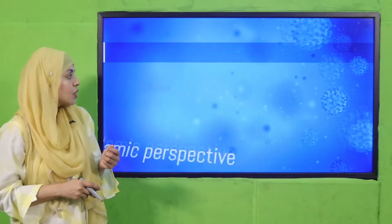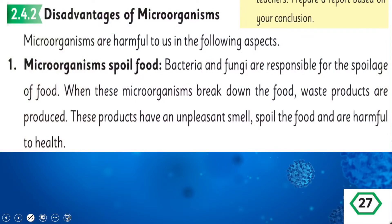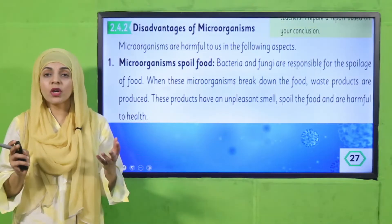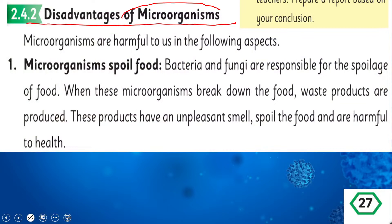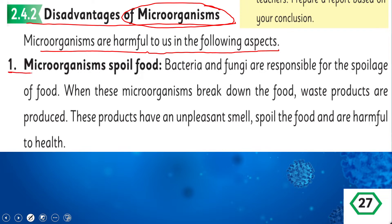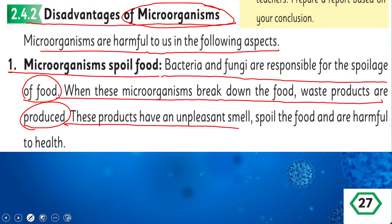My dear students, please open page number 27 in your Science 5 books. Let's start the reading. Disadvantages of microorganisms: as you know, we have already discussed the advantages of microorganisms; today we will discuss the disadvantages. Microorganisms spoil food — bacteria and fungi are responsible for the spoilage of food. When these microorganisms break down food, waste products are produced that have an unpleasant smell, spoil the food, and are harmful.